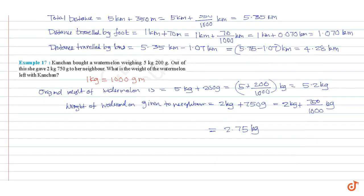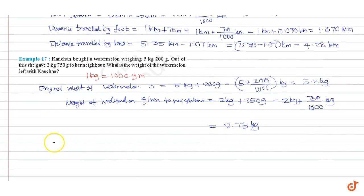Weight of watermelon left equal to 5.2 kg minus 2.75 kg, equal to 5.2 minus 2.75 kg. We can subtract.